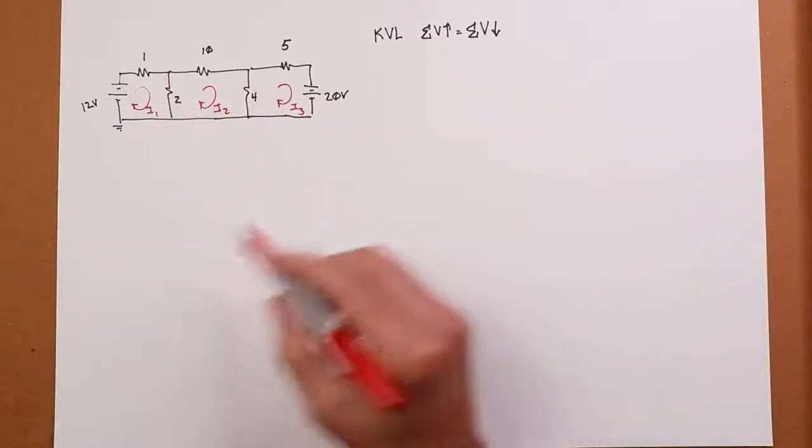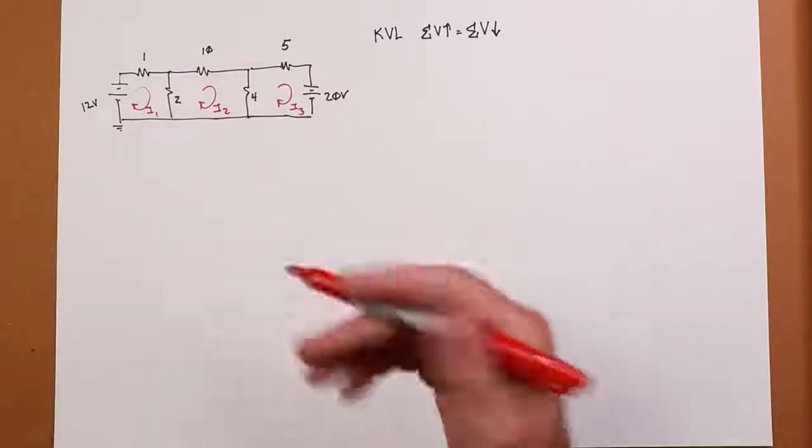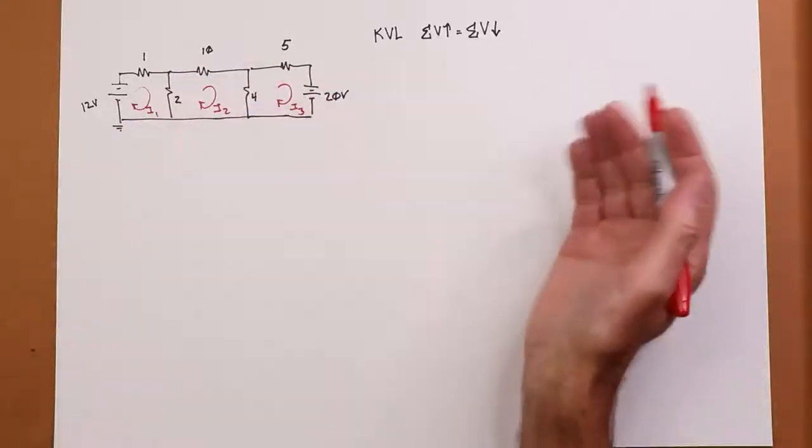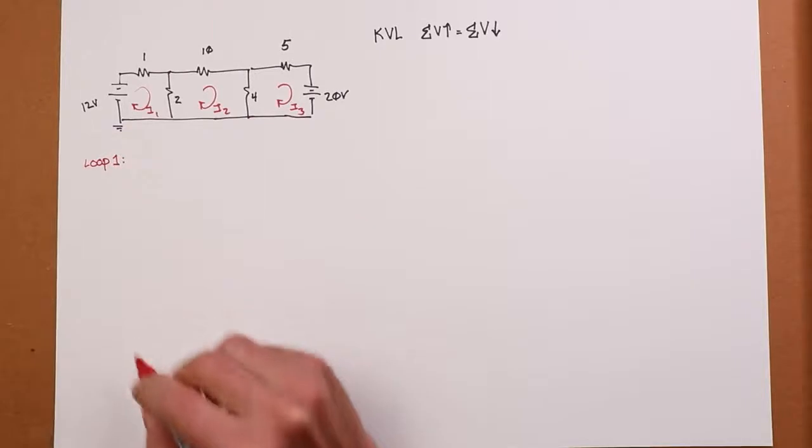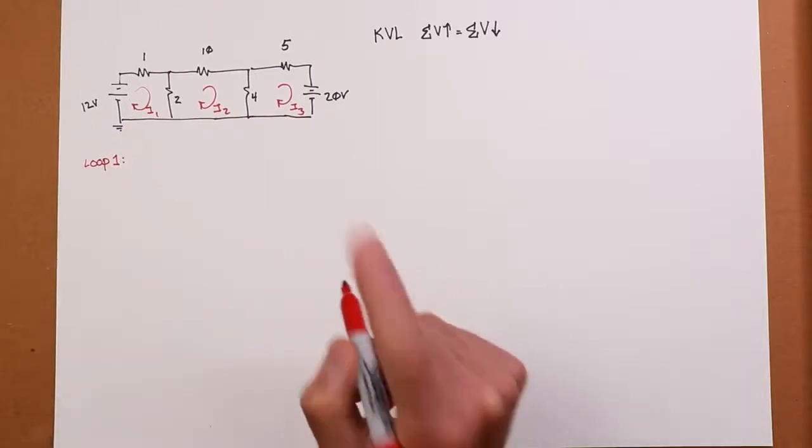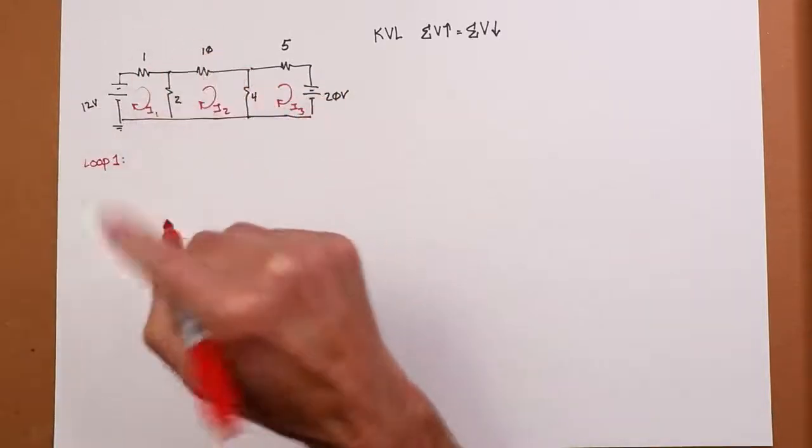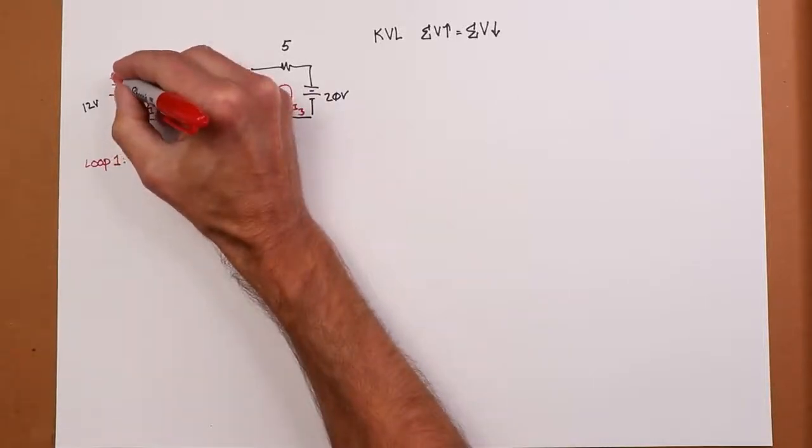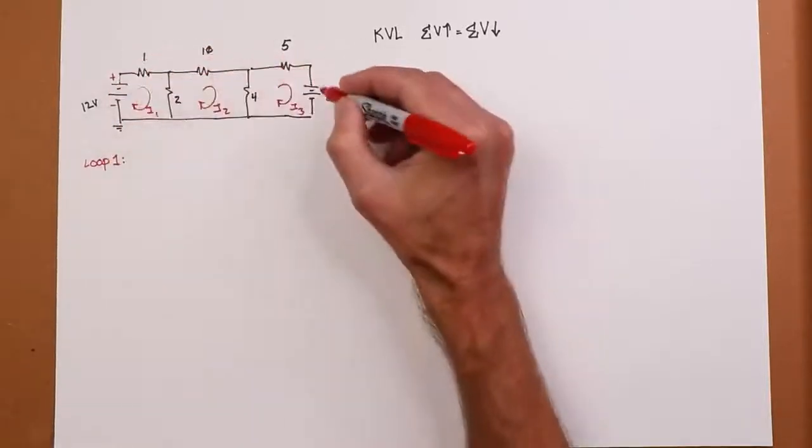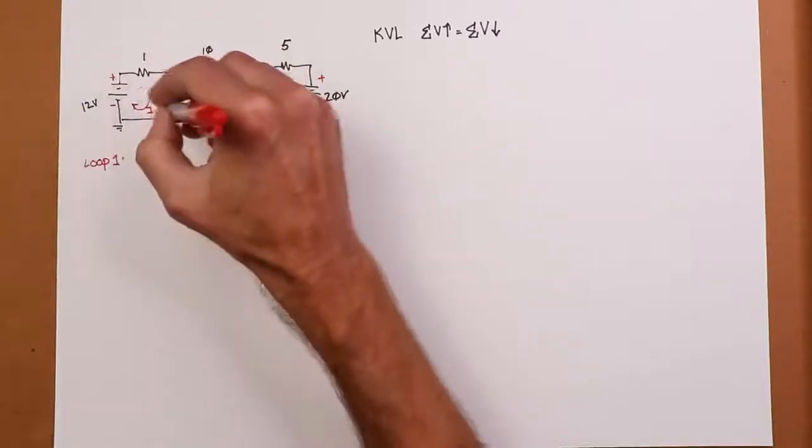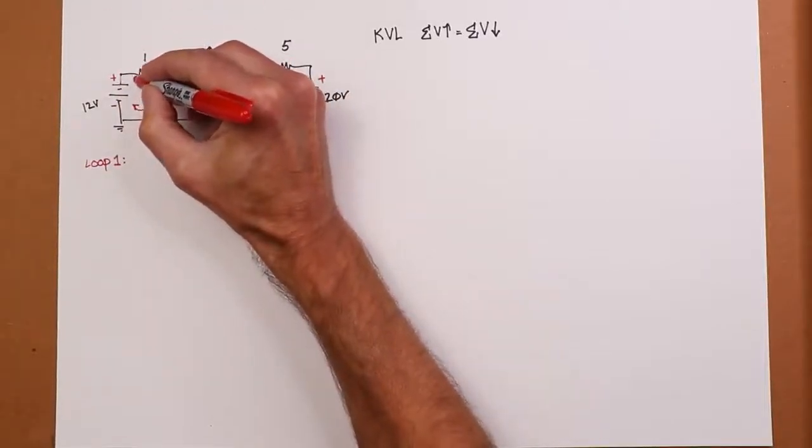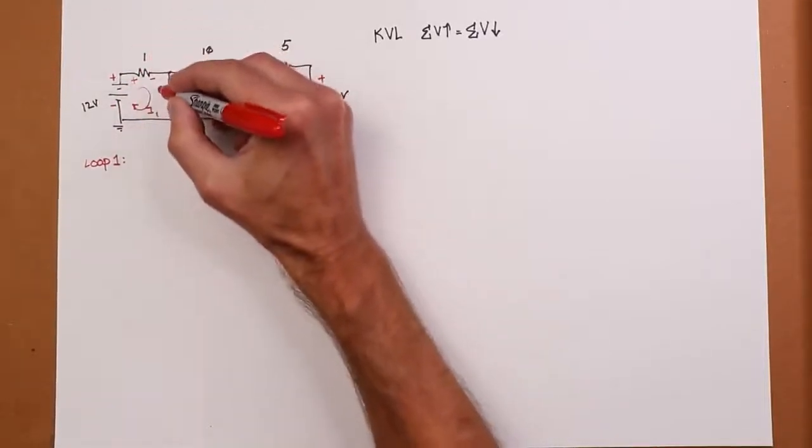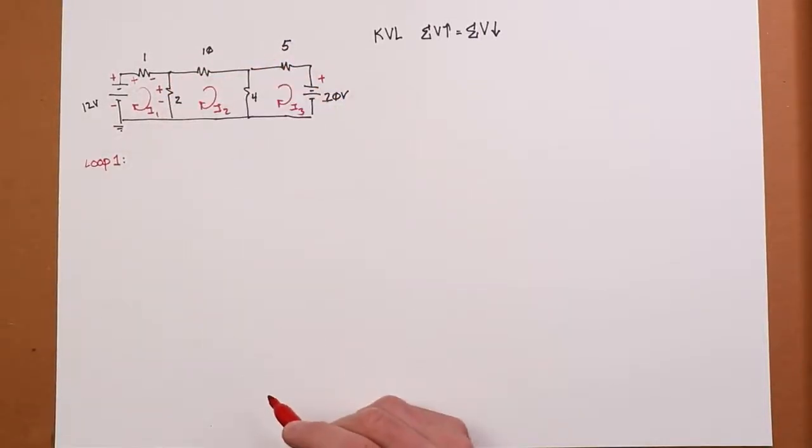So however many loops you have, that's how many equations you're going to get. So we're going to have three equations, three unknowns, the unknowns being I1, I2, I3. So I just come through here and say, what do I have as far as my KVL? If I look at loop one, first thing I want to do is indicate for each of these currents what the polarities are.